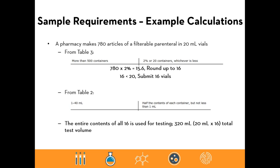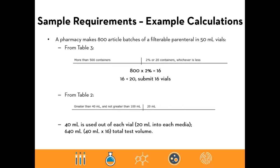Example three illustrates a decimal calculation: a 780-article batch in 20 mL vials. From table three, more than 500 containers requires 2% or 20 containers, whichever is less. 2% of 780 is 15.6 — rounded up to 16 — and 16 is less than 20, so 16 vials are submitted. From table two, the 1-to-40 mL fill means half the contents will be tested: 20 mL × 16 containers = 320 mL total test volume.